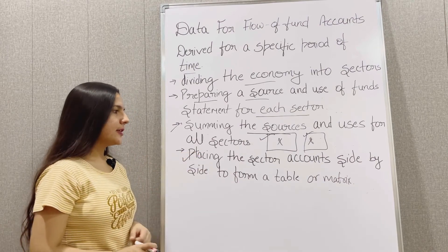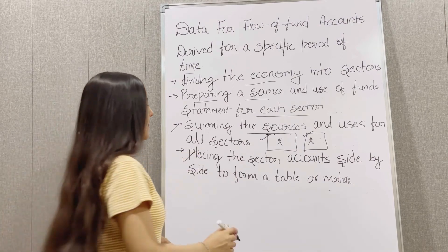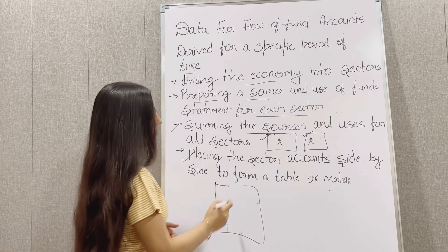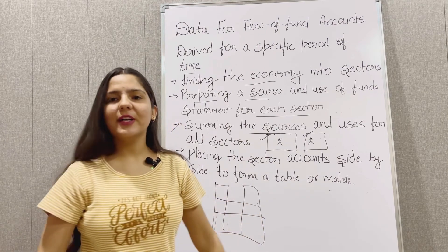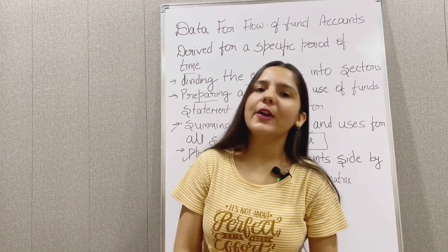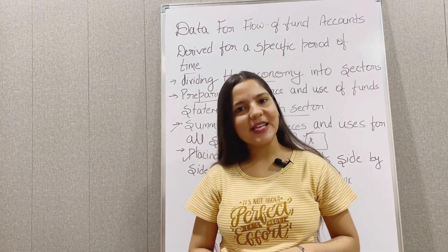Now next step will be placing the sector account side by side to form a table or matrix to get the data for flow of fund account for a particular economy. I hope this topic is clear to you. Thanks for watching.